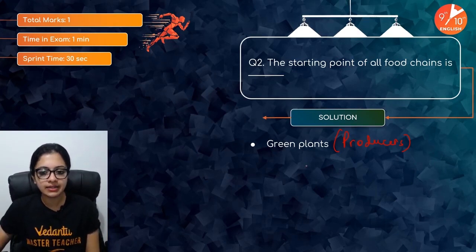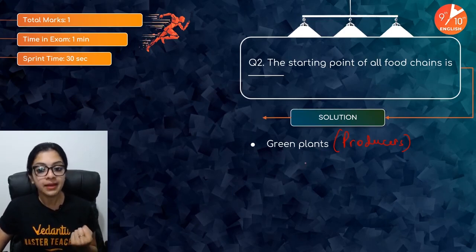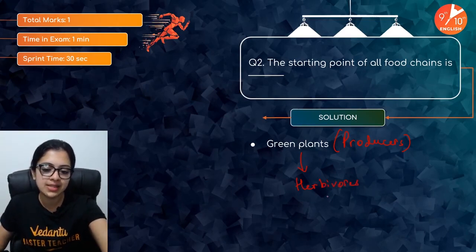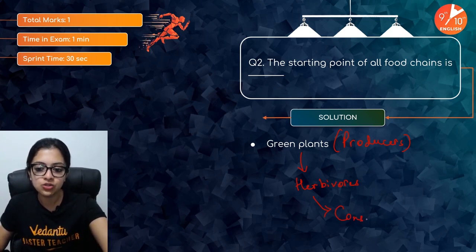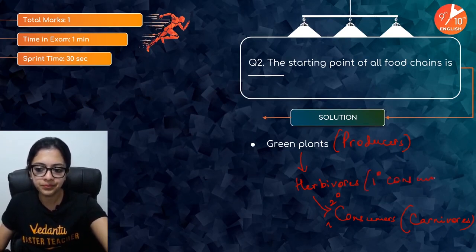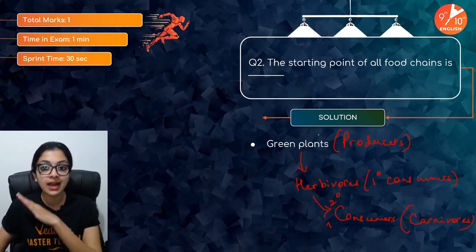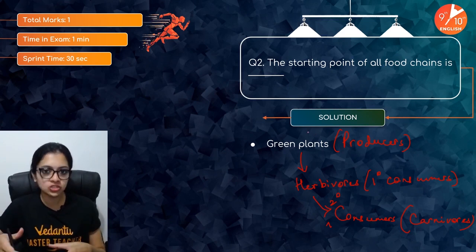Green plants are where food chains begin because they are the organisms which can prepare their own food by photosynthesis. They would be fed upon by herbivores — the primary consumers. Primary consumers are then fed upon by secondary consumers, or carnivores. These terms are good to know, but the key point is that green plants or producers are the starting point of all food chains.